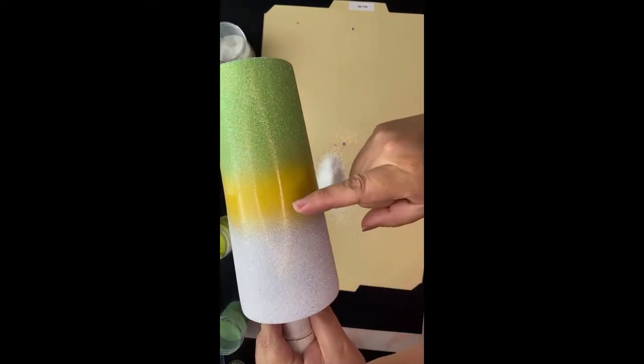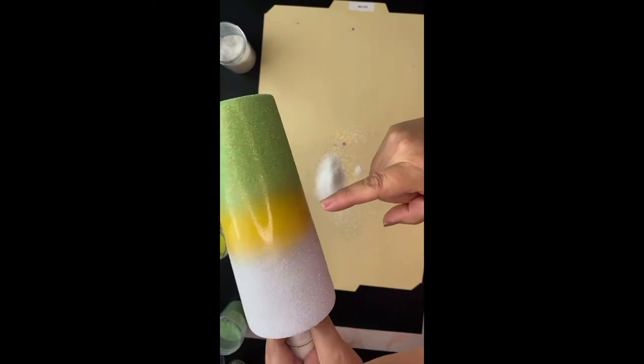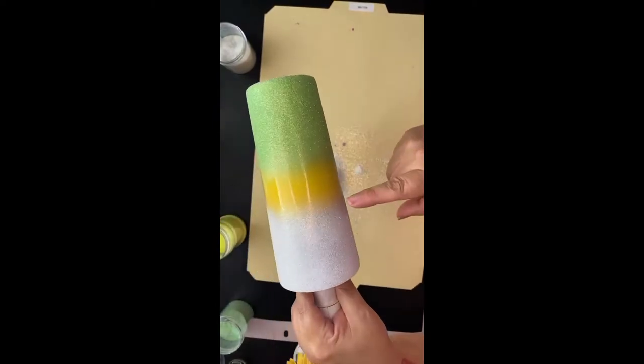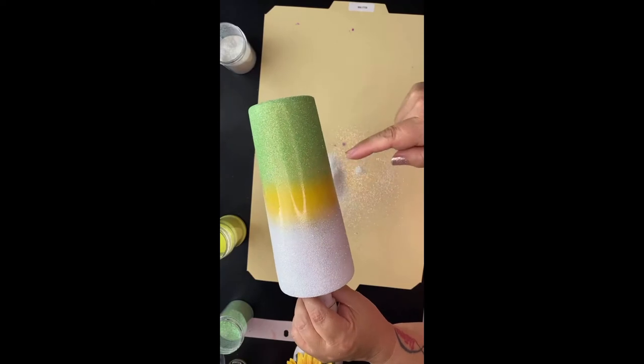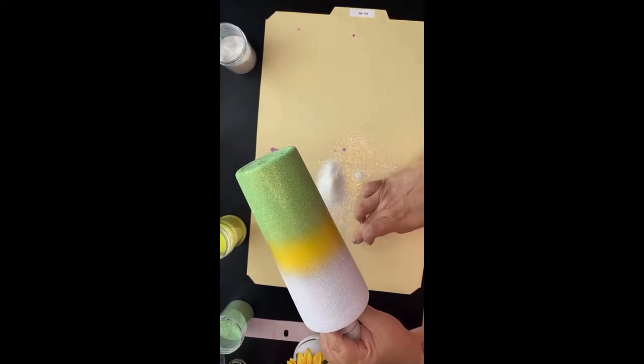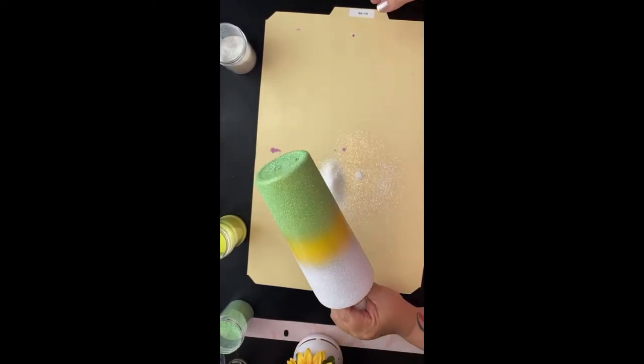So now we're going to work on this yellow area and the yellow is going to fill in here at the white and the green. I'm going to focus it to make sure that I get good coverage in the very middle and let it blend into our other two colors.